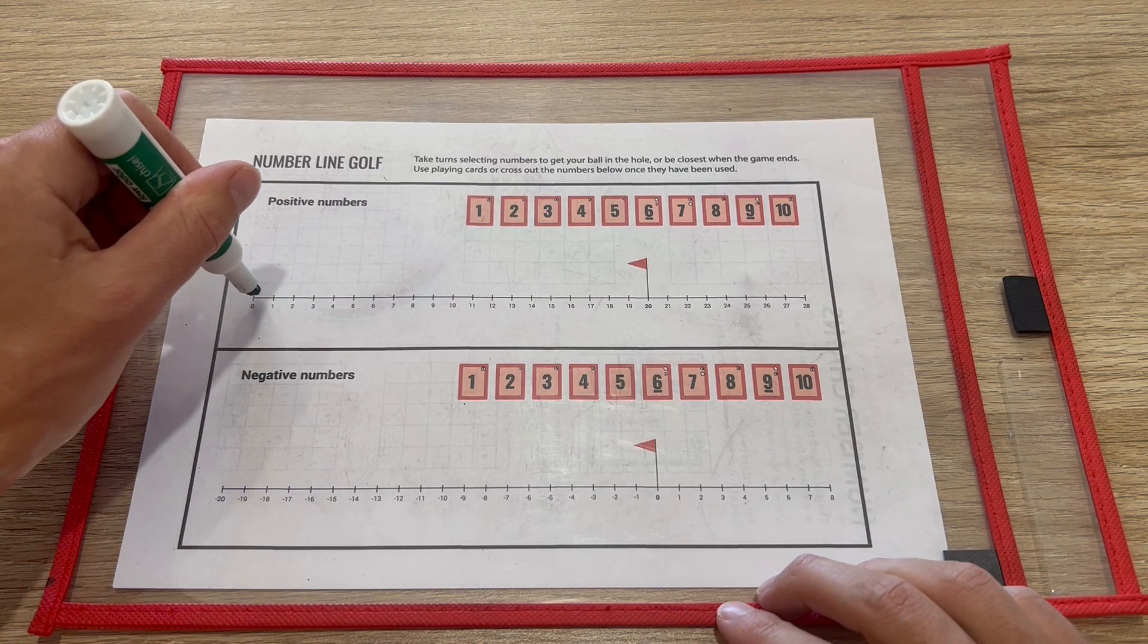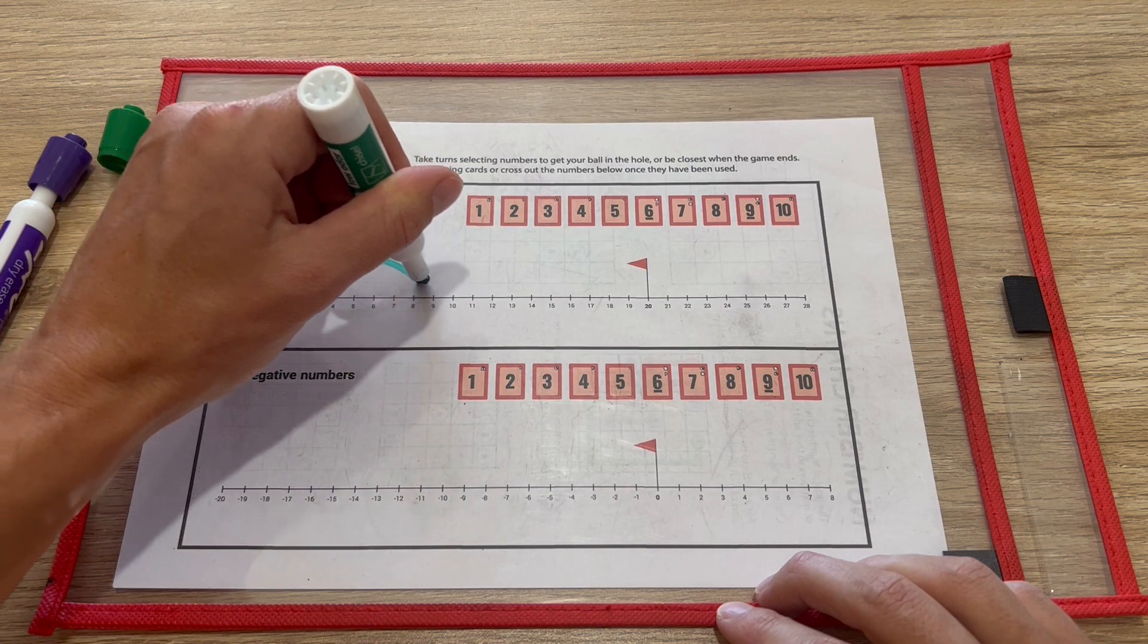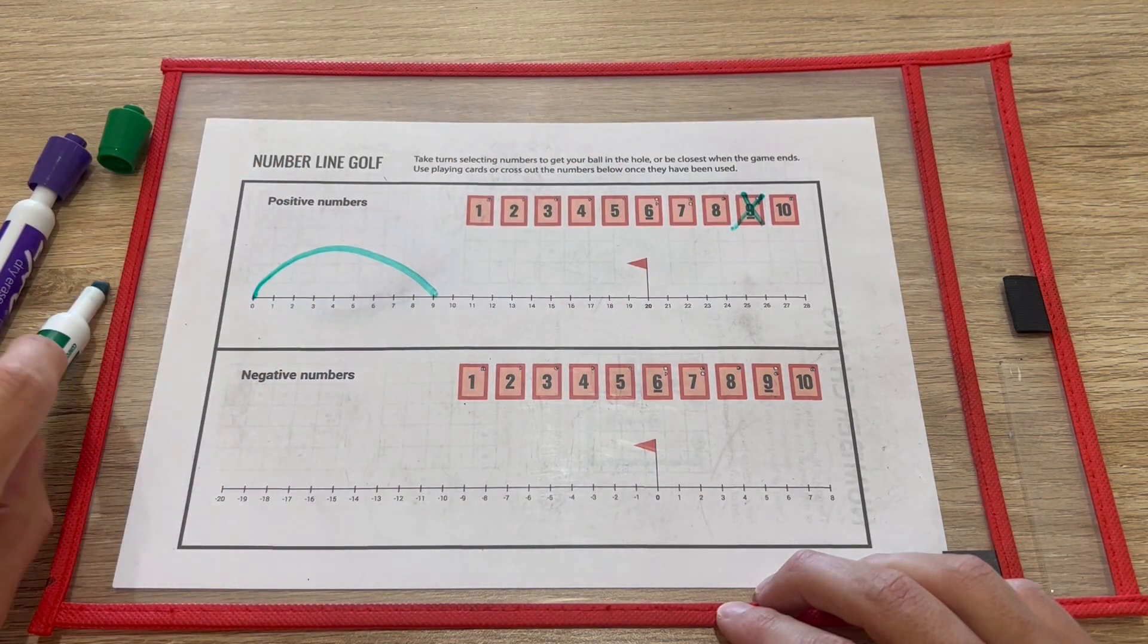So I'll just demonstrate quickly. If green shows a 9, they get to cross off the 9 here, now no one can use that.